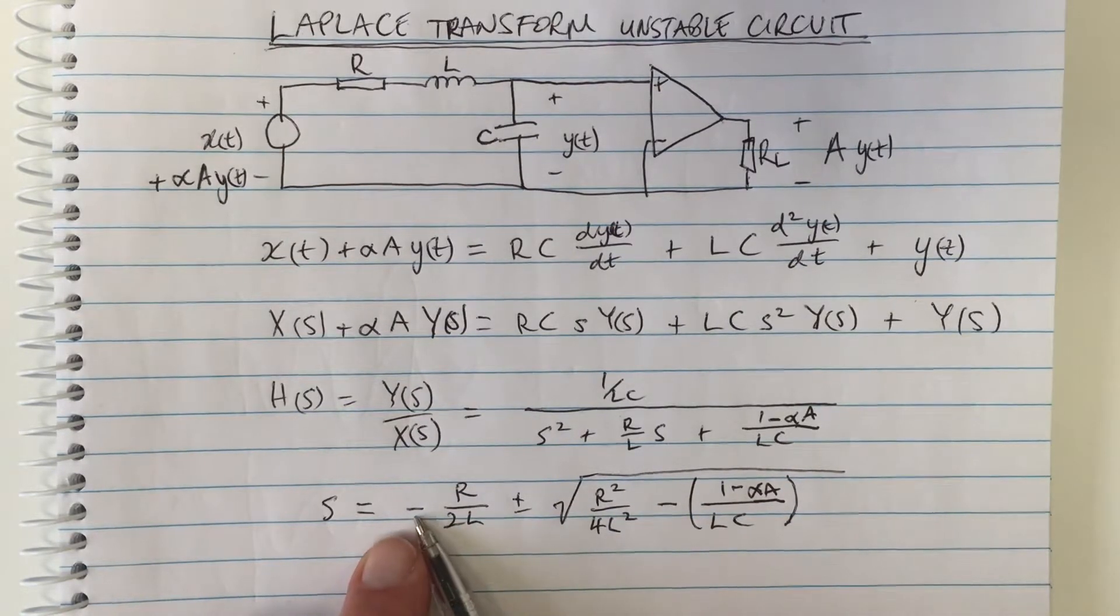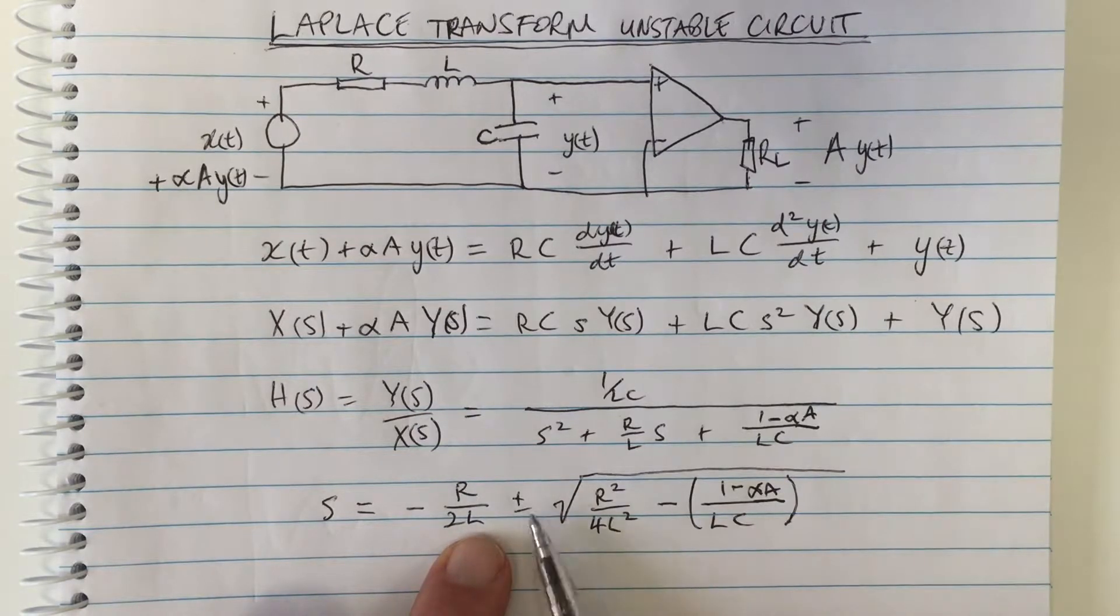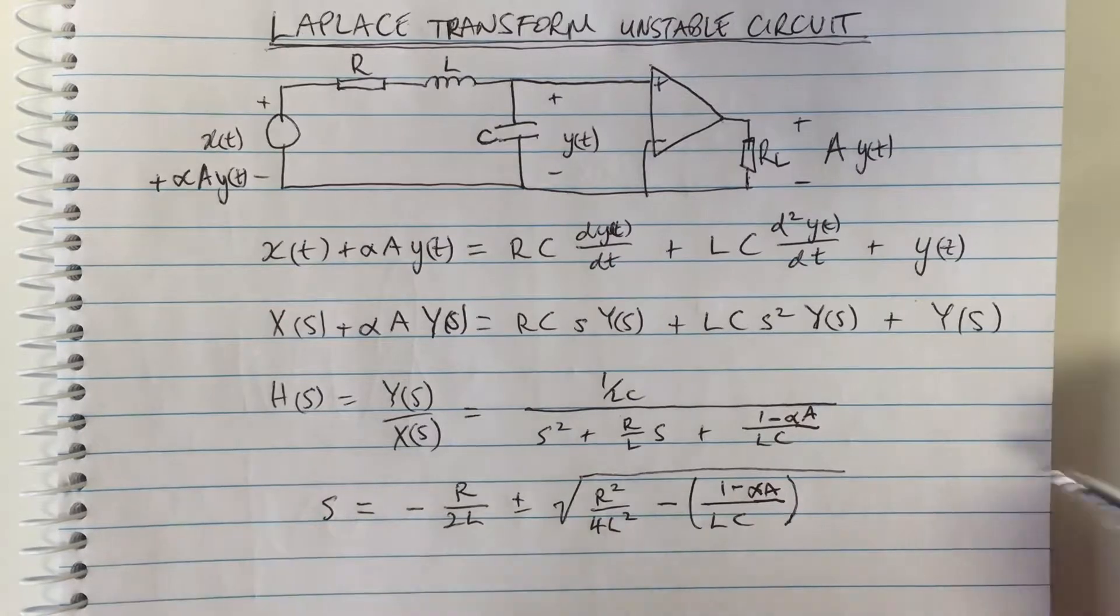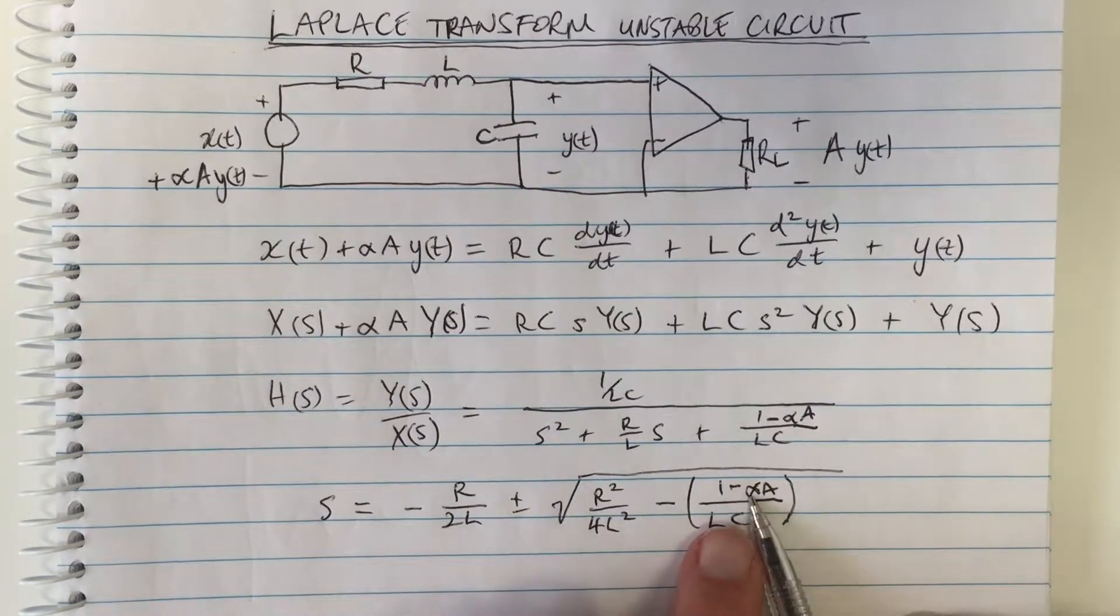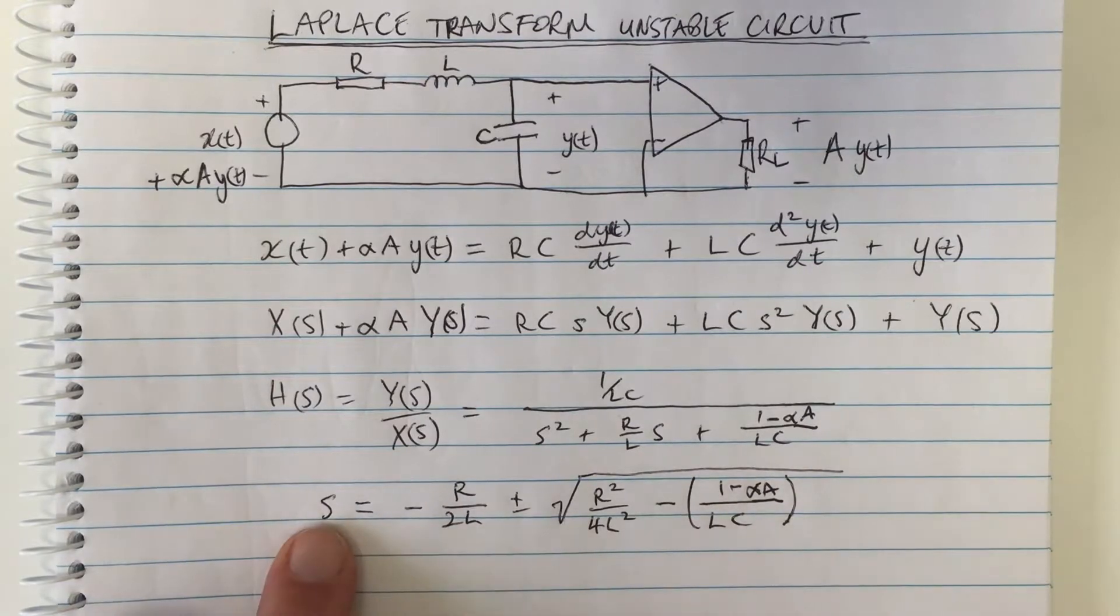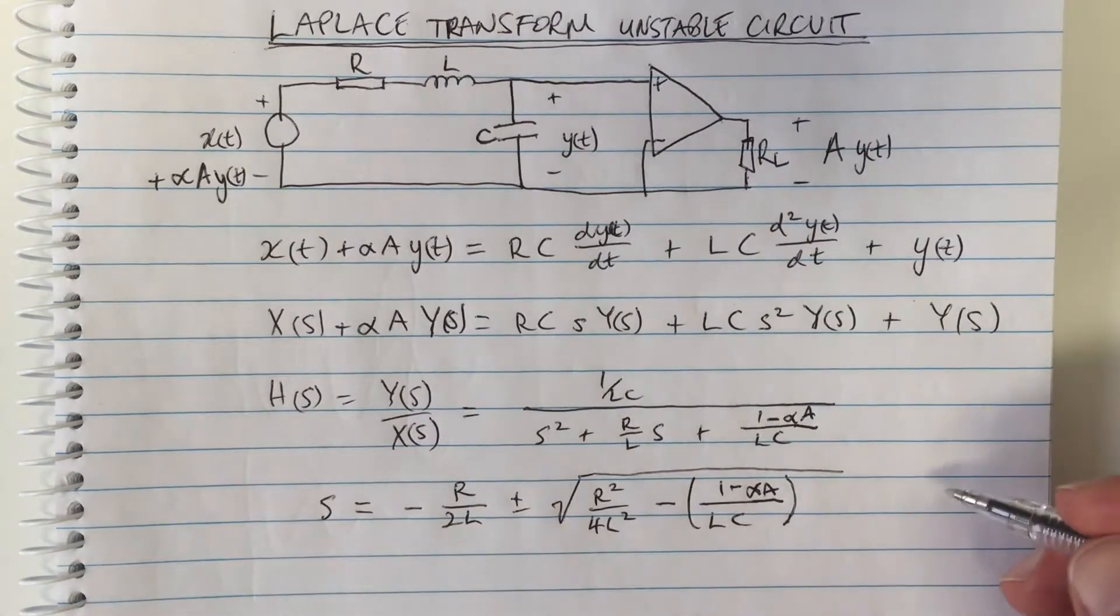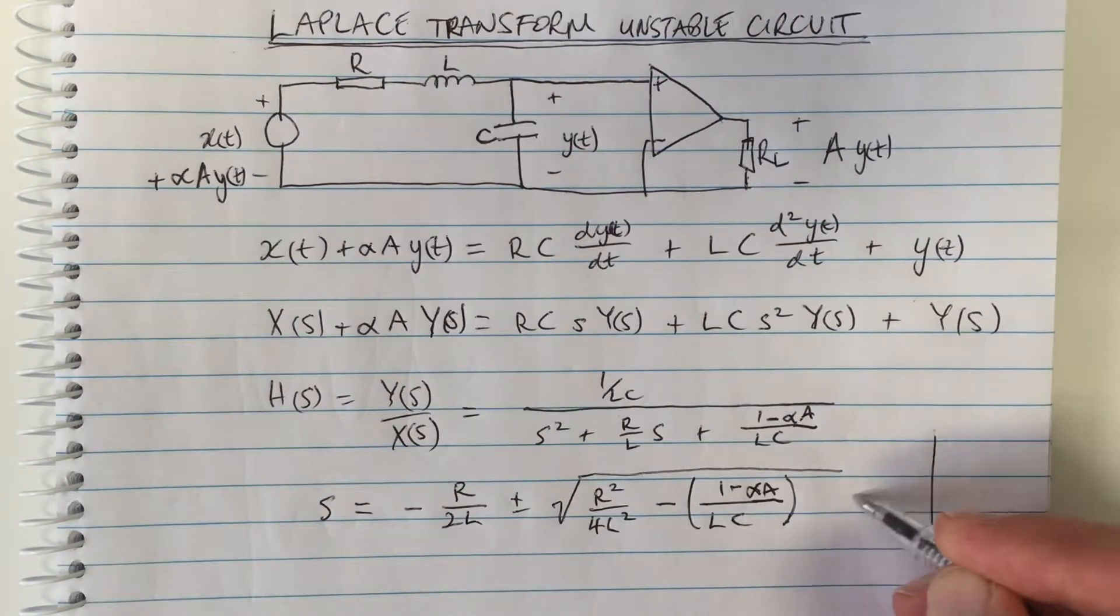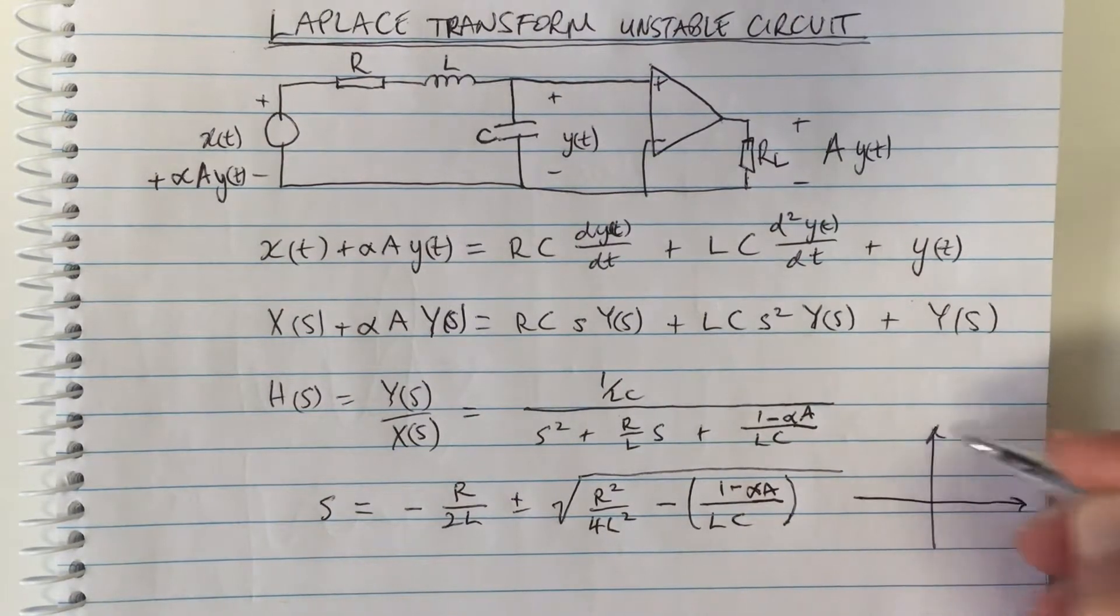When we take the square root we get a number bigger than R on 2L, which means minus R on 2L plus a number bigger than it would push this pole into the positive region. So if alpha times A was bigger than one we would have a positive pole.